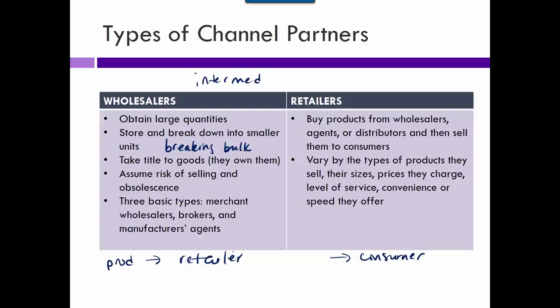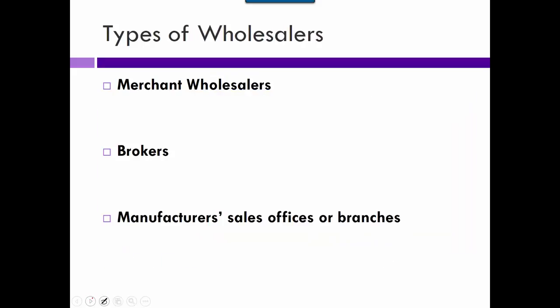Some wholesalers take title to the goods, which assumes the risk of selling it — a big relief for the producer. If it doesn't sell, it doesn't matter to the producer because he's already been paid. A retailer buys stuff from either wholesalers, distributors, or directly from the producer and then sells to consumers.